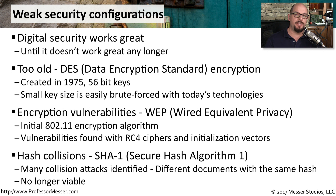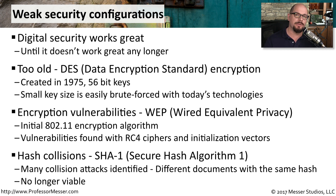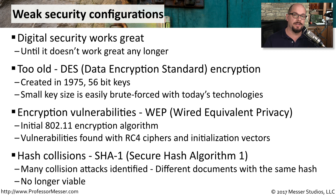Another weak security configuration would be to use a hashing algorithm that was susceptible to collisions. A collision is when different documents have exactly the same hash associated with them, which makes it very difficult to verify that nothing inside that document might have been changed. A good example of this was SHA-1, the Secure Hash Algorithm 1, where hash collisions were found, and we decided to migrate away from SHA-1 and use other hash algorithms that were not susceptible to these collisions.